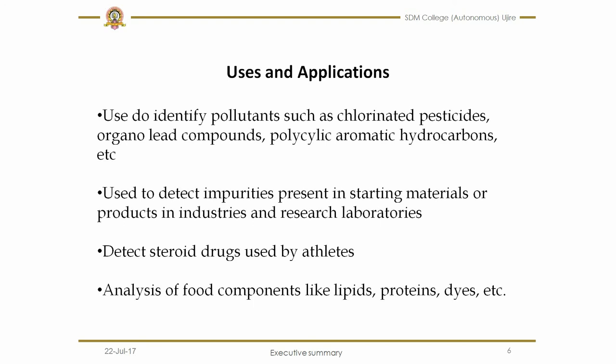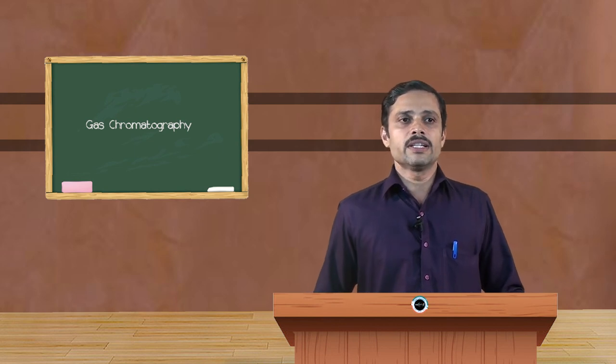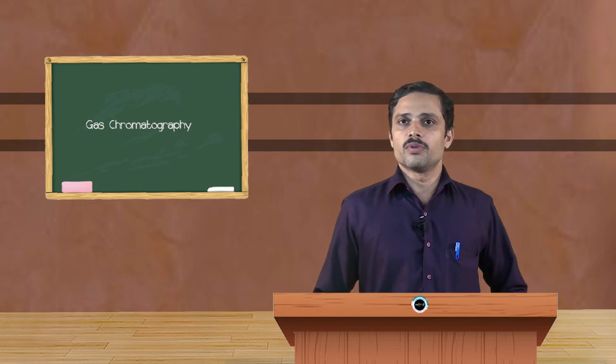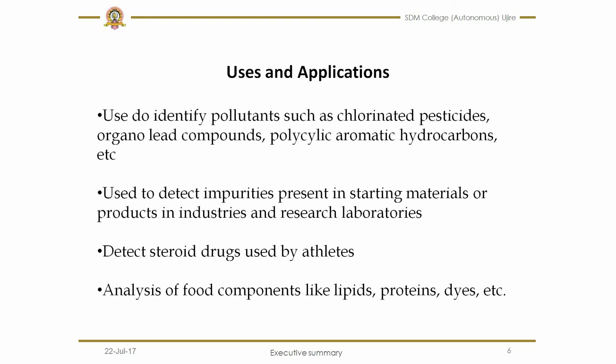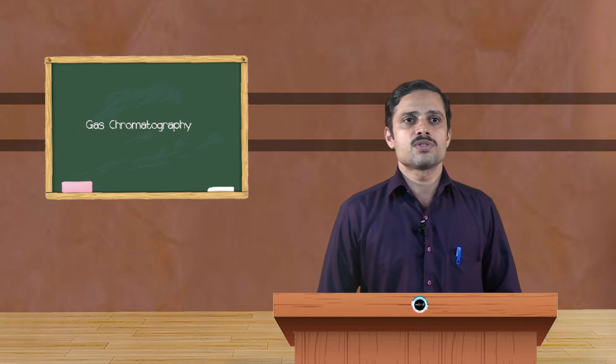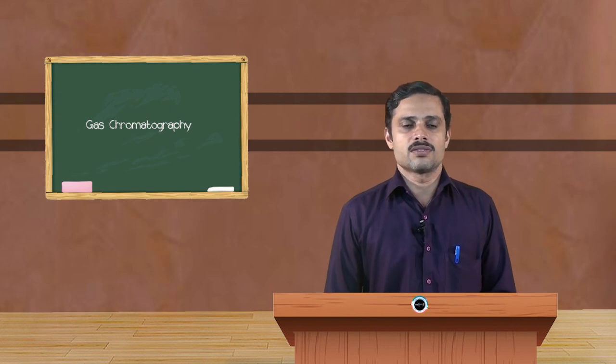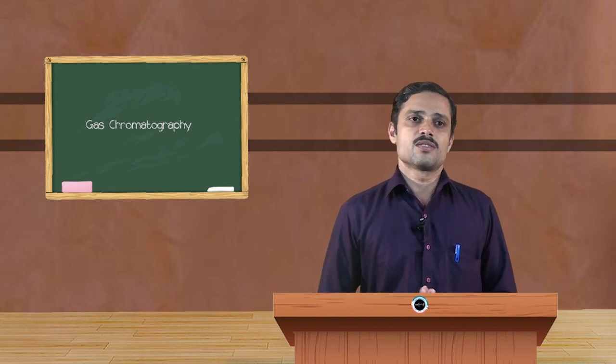Also, it is used to detect steroid drugs used by athletes. Now the doping is very much extensively used by athletes. The blood sample or urine sample collected from the athletes will be injected. If there is any drug he or she has taken, it can be detected. Also, it is used for the analysis of food components like lipids, proteins, dyes, et cetera. This gas chromatographic technique is very much important for the academic purpose as well as for the industrial purpose. It is extensively used in the industries to assess the starting materials and the products especially, and also in research laboratories by scientists for the analysis of their synthesis. Thank you.